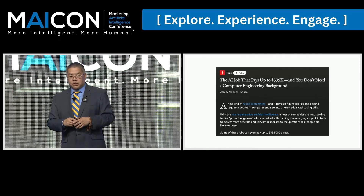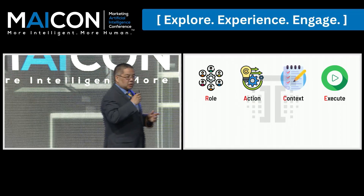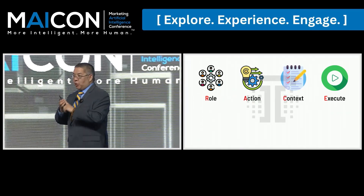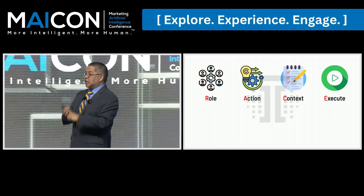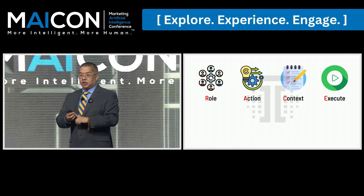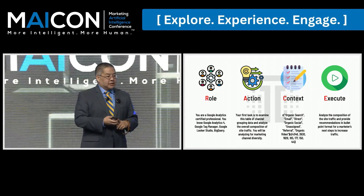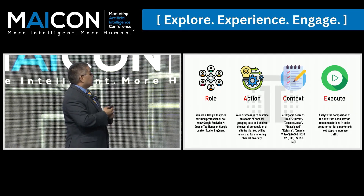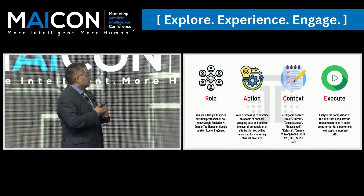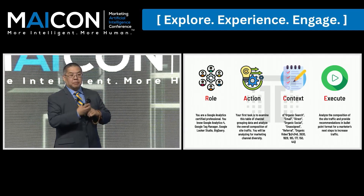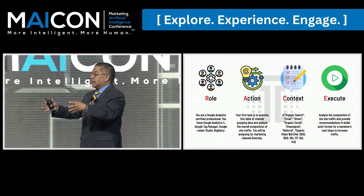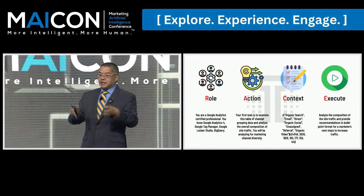The framework, the structure that we use, is called RACE: Role, Action, Context, Execute. If you want to construct reasonably effective prompts across platforms, this is the structure you use. So you would say things like, for your role: 'You are a Google Analytics certified professional. You know Google Analytics 4, Google Tag Manager, Google Looker Studio, BigQuery.' We're giving it role-based words that give it guidelines — start digging up probabilities on these things.